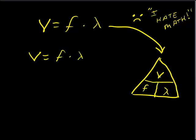If we're looking for the frequency and we have the velocity and the wavelength already in the equation, the frequency is equal to velocity divided by wavelength. So frequency equals velocity V divided by wavelength lambda.